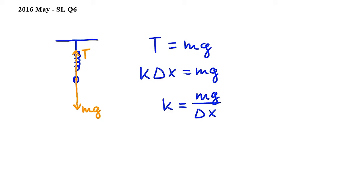Since Δx is the difference between L and L₀, we can replace it by L minus L₀, which will give us mg over L minus L₀. Therefore, the answer to this question is C.